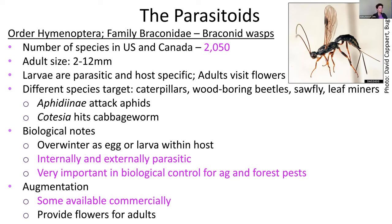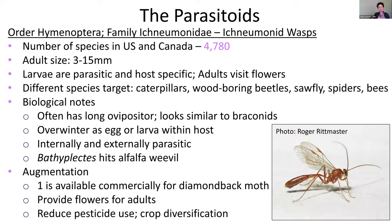Ichneumonid wasps look very similar to braconids — you often have to examine wing venation under a microscope to tell them apart. We have over 4,700 species of ichneumonid wasps in North America. They attack basically the same groups as braconids — caterpillars, wood-boring beetles — and some also have a very long ovipositor for drilling into wood. Some are commercially available.